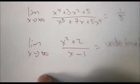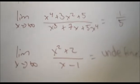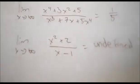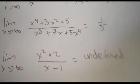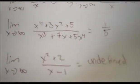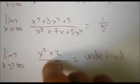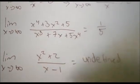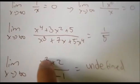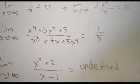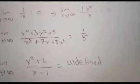As the limit approaches infinity, when the power of the numerator is greater than the power of the denominator, it is undefined because if we substitute infinity into any of these, we get infinity squared. We do not know what infinity squared is, so it is undefined.